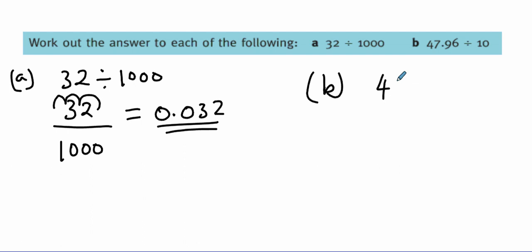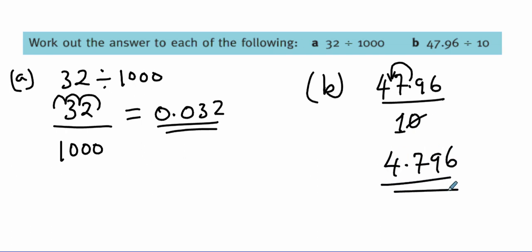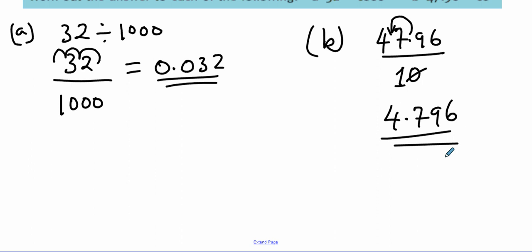Then go to B. You have 47.96 divided by 10. What you do is just move one decimal place. You move one decimal place, so the answer will be 4.796.